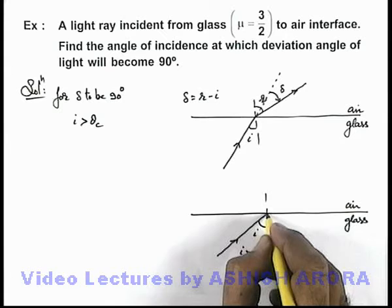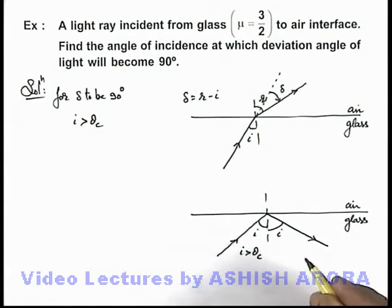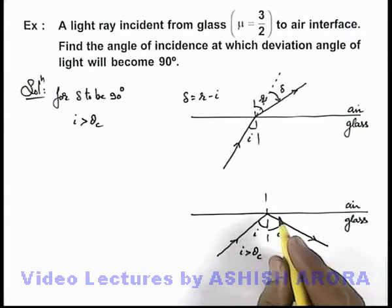Then according to laws of reflection, reflected light will be going at the same angle i, as for more than critical angle, TIR takes place.